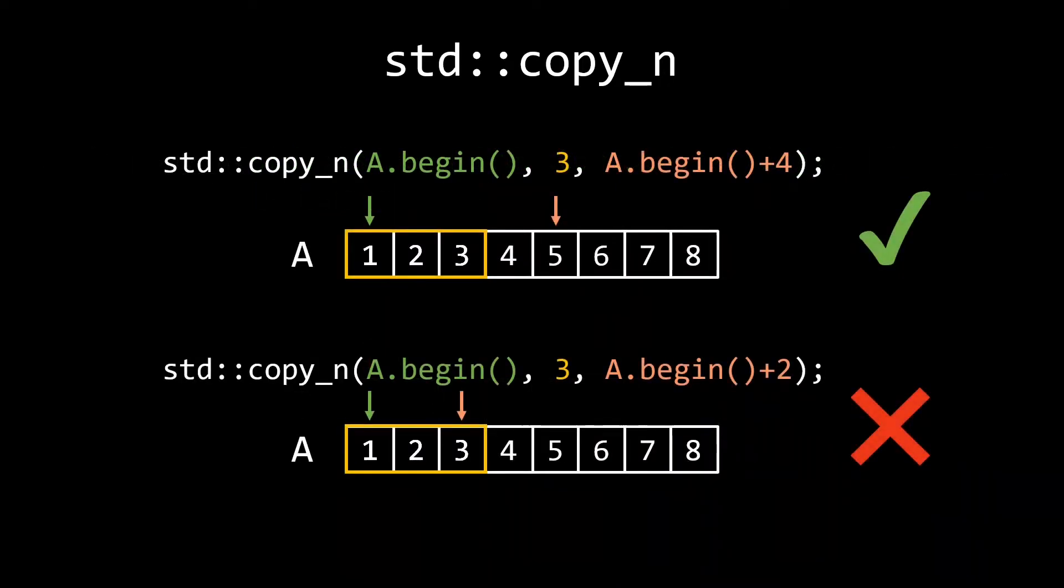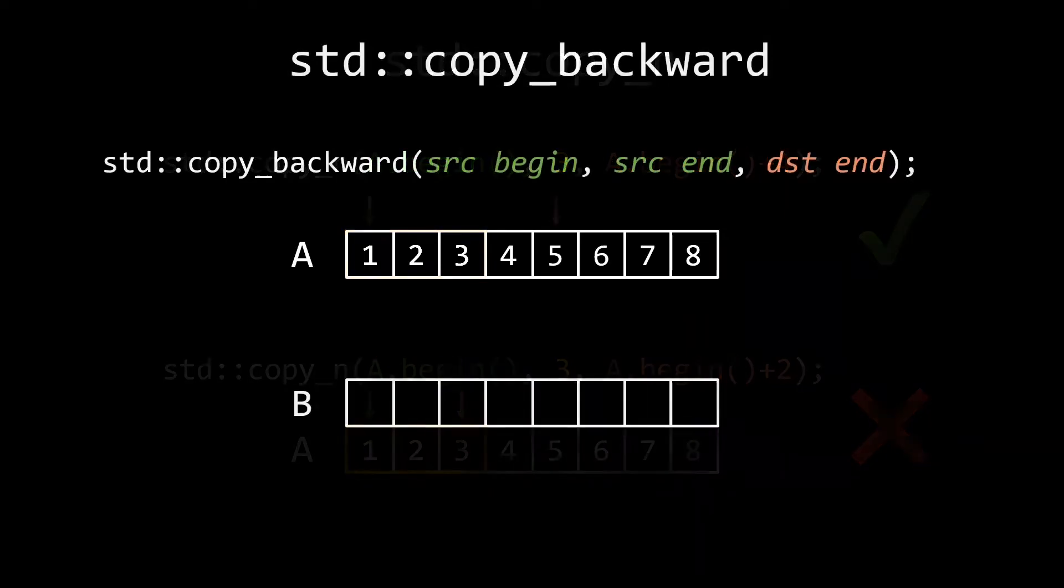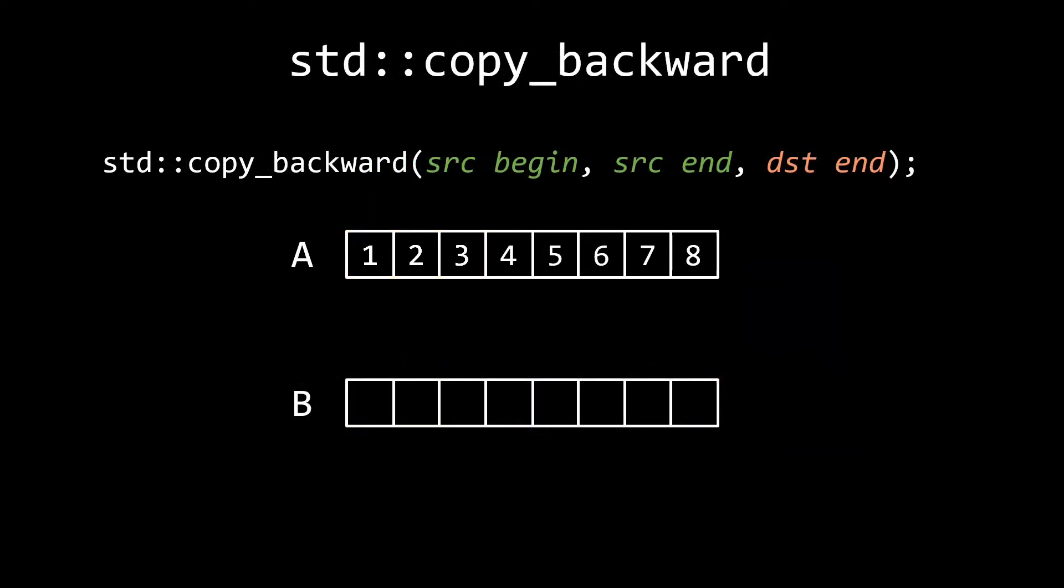copy_n shares the same restrictions on the destination iterator as std::copy. The destination should lie outside the source range. A nice way to work around this restriction is to use copy_backward instead. copy_backward is similar to the normal copy in that you specify your source using an iterator range. But for the destination we will specify its end iterator. In contrast to the normal copy, copy_backward will both read and write backwards. Let me demonstrate this. Say we again want to copy the first three elements of A to B.